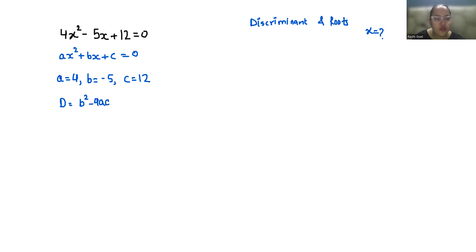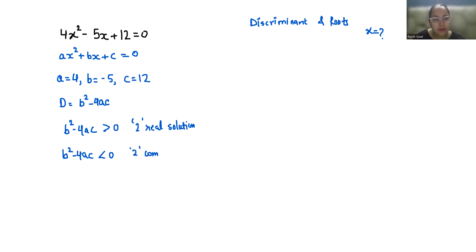There are three conditions for this formula. First, if b² minus 4ac is greater than 0, that means two real solutions exist. If b² minus 4ac is less than 0, that means two complex solutions exist — no real solution. And if it equals 0, that means only one real solution exists.